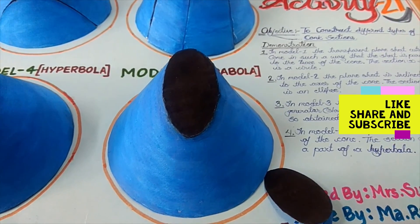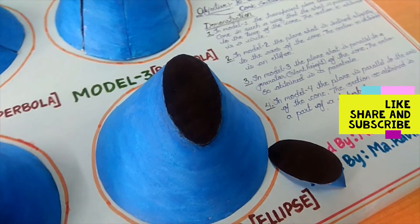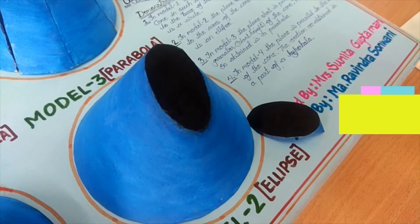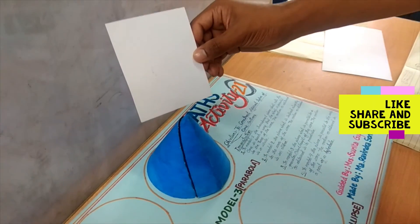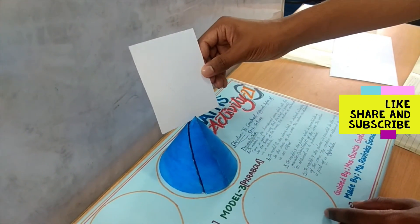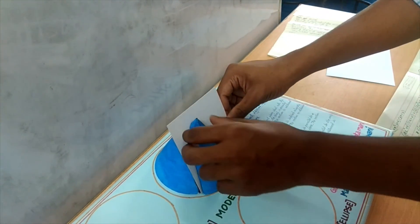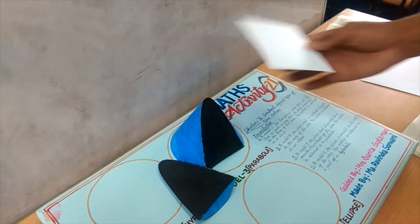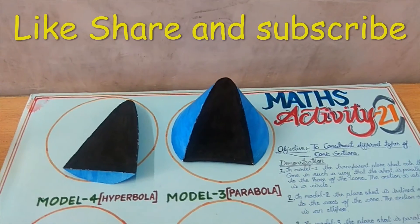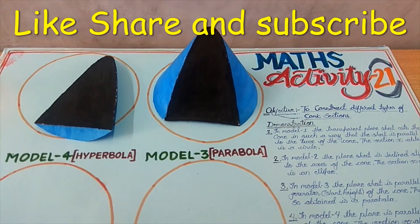This means alpha is less than beta and beta is less than 90. When the plane is parallel to a generator of the cone, the section obtained is a parabola, meaning beta equals alpha.